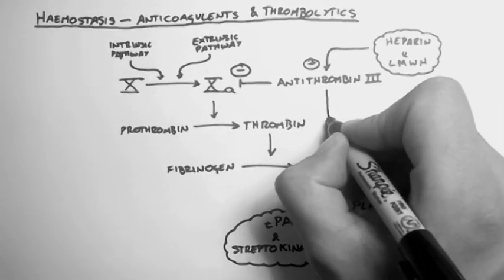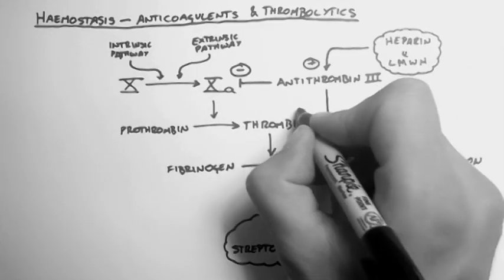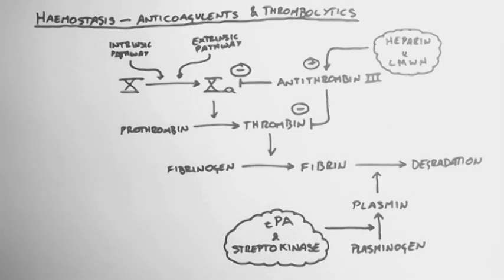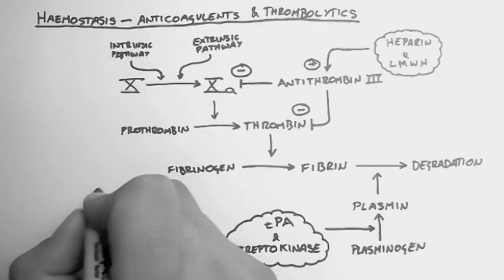Now antithrombin 3 actually inhibits thrombin production as well, so its effects are twofold. Now let's have a look at another mechanism.